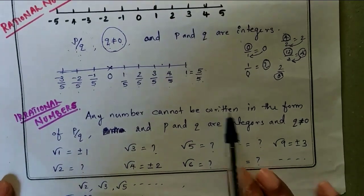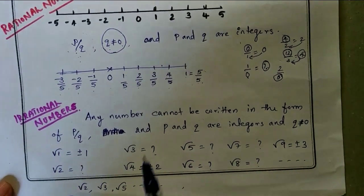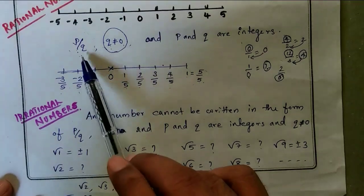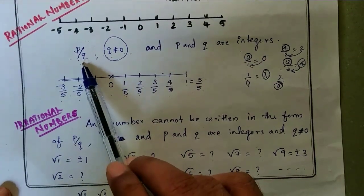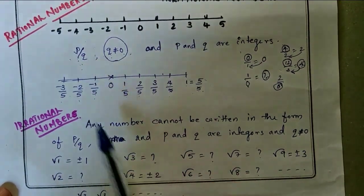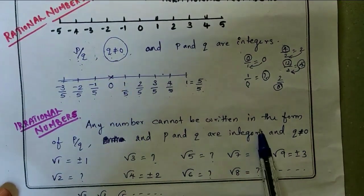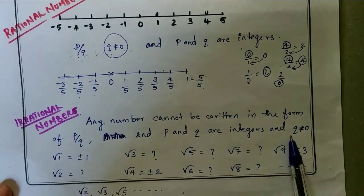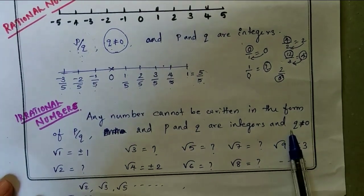The next type of numbers are irrational numbers. Irrational numbers cannot be written in the form of p by q, where p and q are integers.